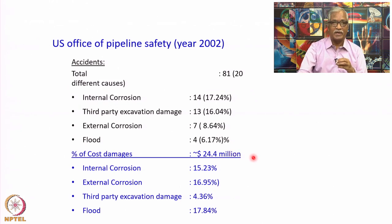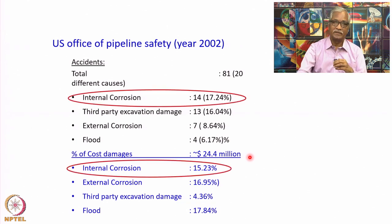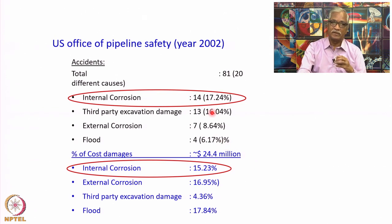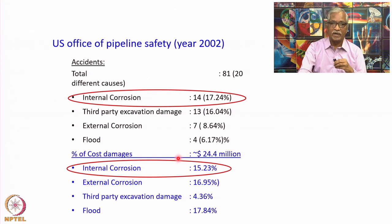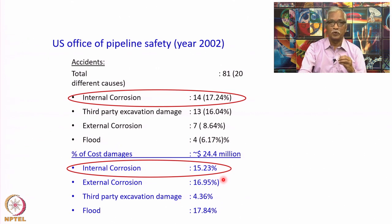Looking at the importance of internal corrosion of pipelines, if you look at the number of failure cases attributable to internal corrosion, it is about 17.24 percent as per the US Office of Pipeline Safety data from 2002. In terms of the cost of damages occurring due to internal corrosion of pipelines, it is about 15.23 percent. So it is a significant amount of loss because of internal corrosion.